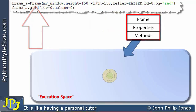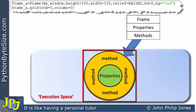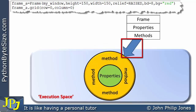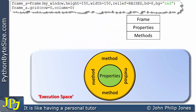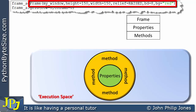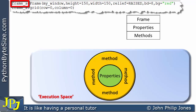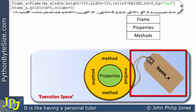From the class we produce an instance of the class — the object. I'm showing that instance being created using an arrow in the diagram. We now have the object in the execution space based upon the Frame class. The code responsible for producing the instance of the Frame class is assigned to frame_A, and I can show that by labelling the object with frame_A.